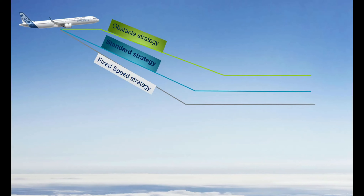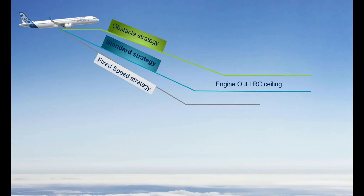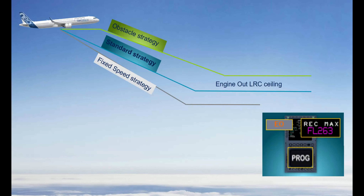During the flight preparation, you can review the descent strategy to adopt in the event of an engine failure. In the case of an engine failure during cruise, you may have to descend to the one-engine inoperative ceiling using one of the three following strategies: the standard strategy, the obstacle strategy, or the fixed speed strategy. The one-engine inoperative ceiling depends on the strategy.